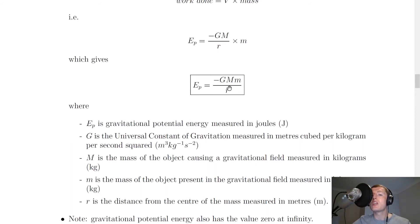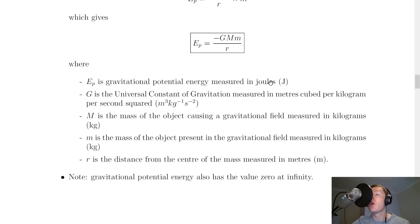So all we need to do to get from our gravitational potential V to our gravitational potential energy Ep is we multiply our gravitational potential by the mass of the second object. And what do the symbols mean? Well, Ep is the gravitational potential energy measured in joules. G is the universal constant of gravitation measured in meters cubed per kilogram per second squared, as before.